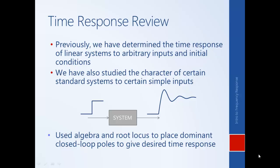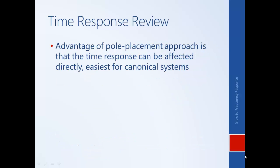We've used algebra and root locus approaches to place the dominant closed loop poles to give us the desired time response — meaning a step response that has a certain time constant, overshoot, peak time, or similar. The advantage of a pole placement approach is that we can affect the time response directly. For canonical first or second order systems, we have precise algebraic relationships that match the form of the system to the character of the step response.